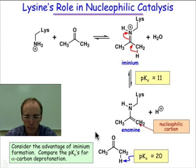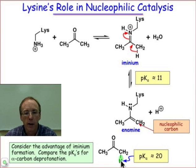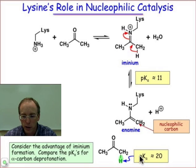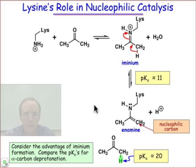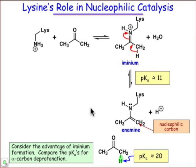If we compare the pKa values, the original acetone molecule had a pKa of about 20, which would make it very difficult, as mentioned before, to deprotonate that under physiological conditions.